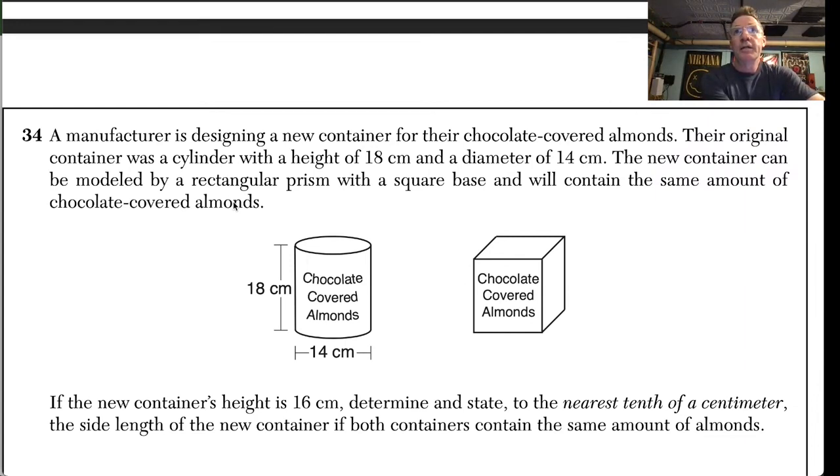The original container was a cylinder, height 18, diameter 14. The new container, modeled by a rectangular prism with a square base, will contain the same amount of chocolate covered almonds.